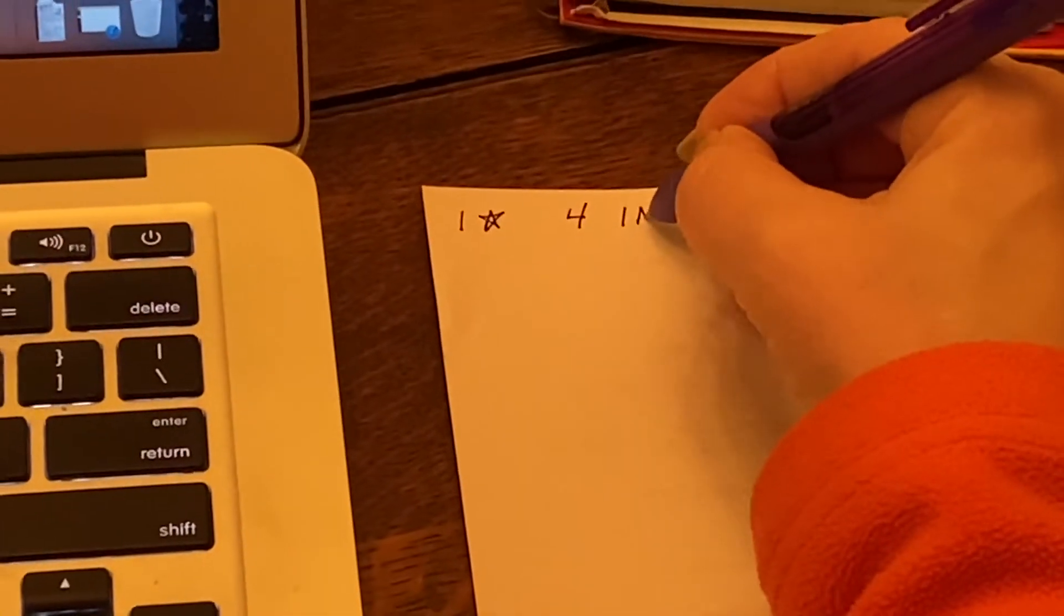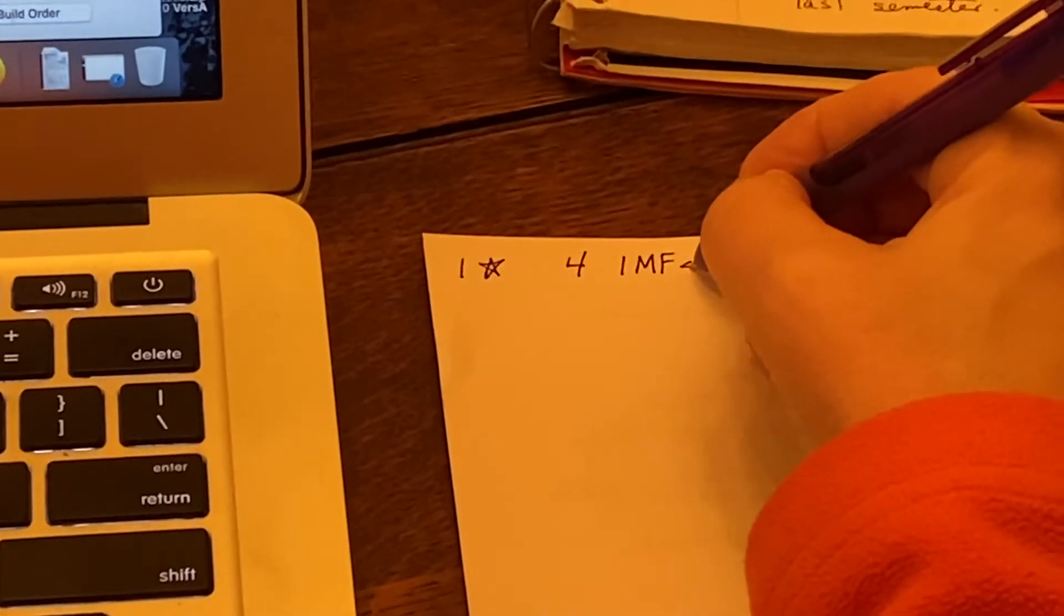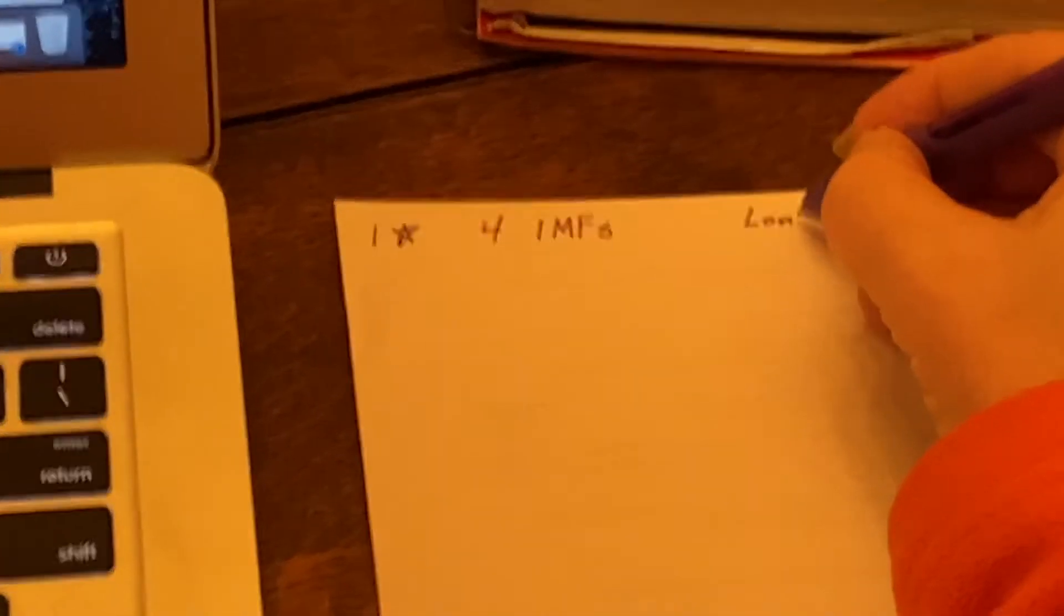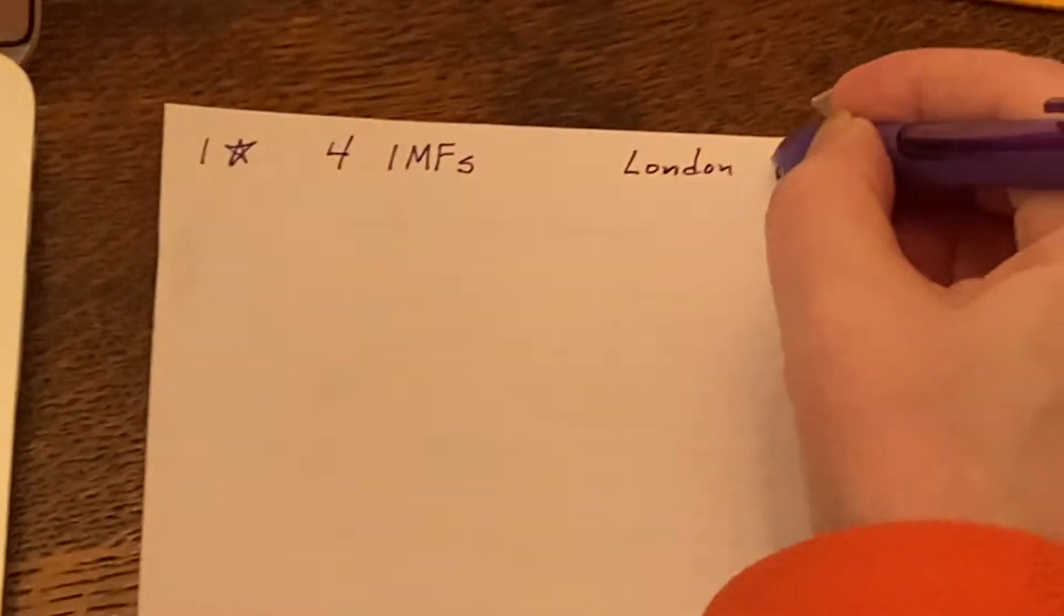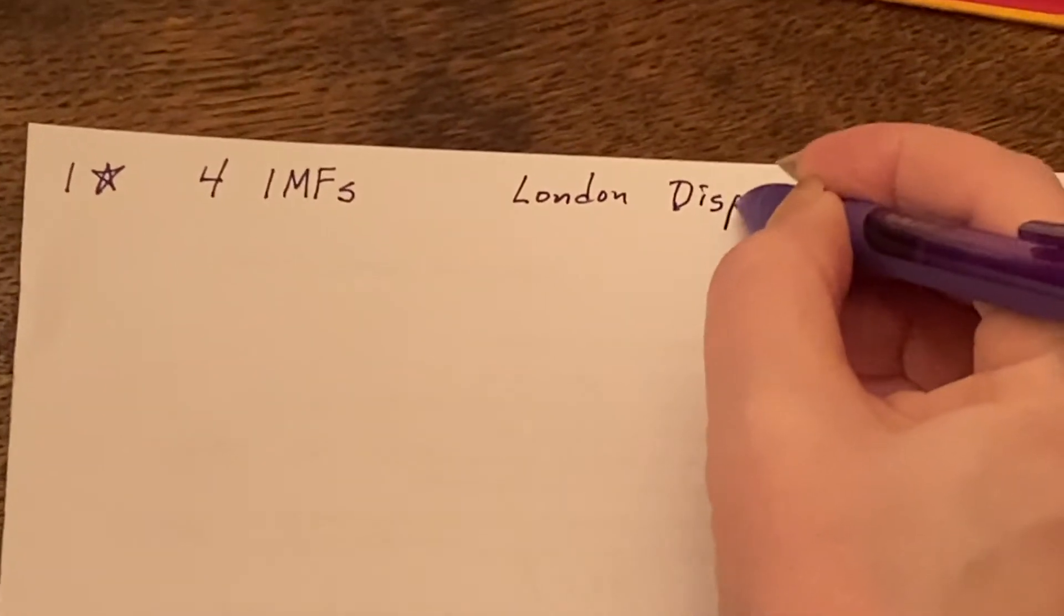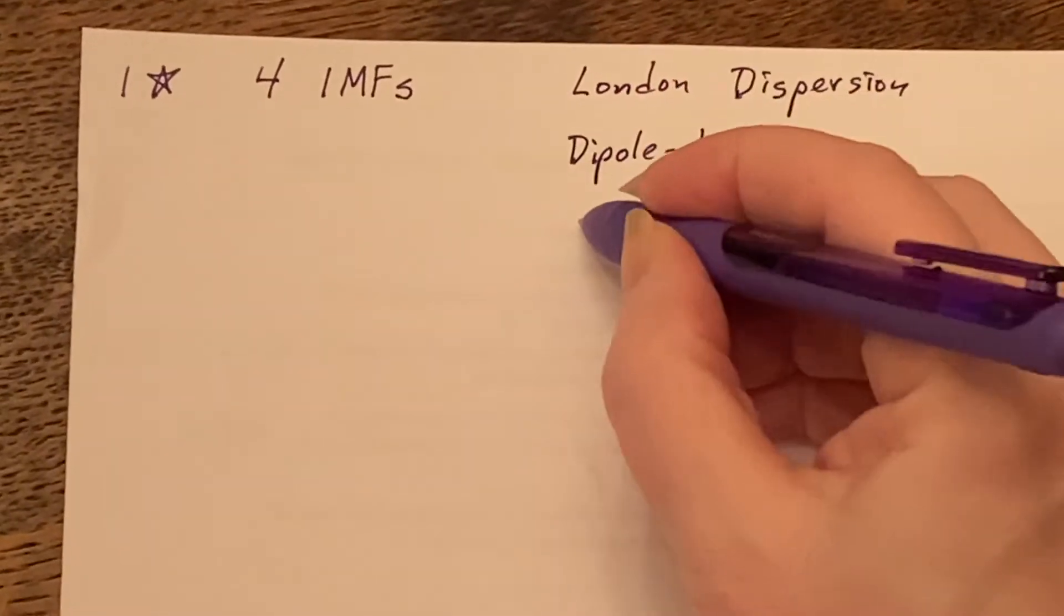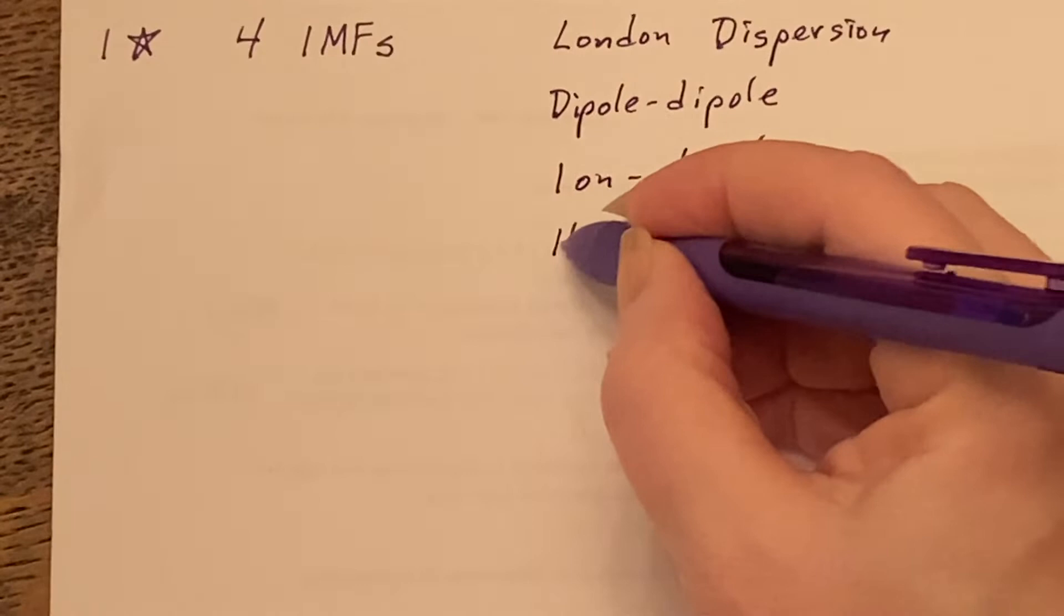So just to remind you, there are four intermolecular forces that we speak of, and they are London dispersion, which is considered to be the weakest one, dipole-dipole, ion-dipole, and hydrogen bonding.